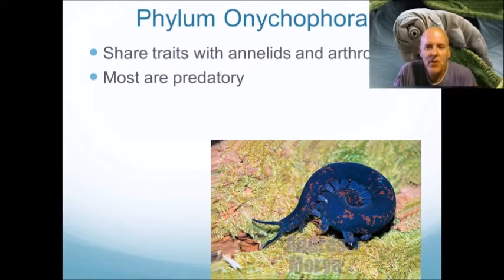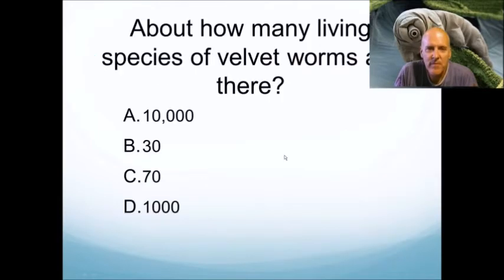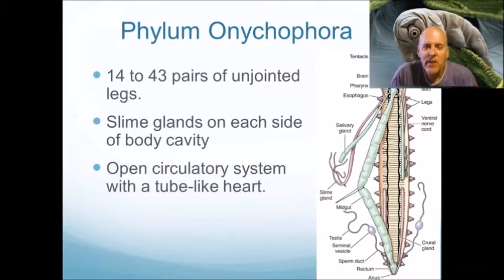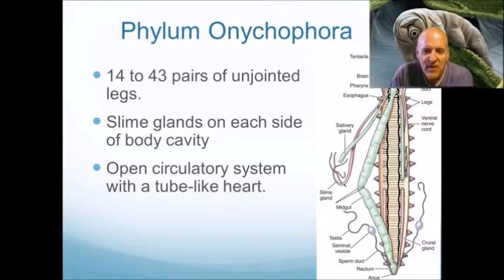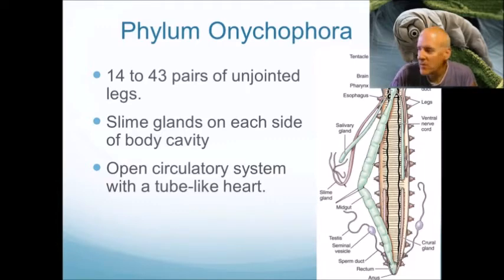Most velvet worms are predatory hunters. They have 14 to 43 pairs of unjointed legs, slime glands on each side of the body, and an open circulatory system with a tube-like heart. Remember what open circulatory means — there are no arteries and veins. Our blood is enclosed in arteries and veins, giving us a closed circulatory system, but in an open system the heart simply pumps blood from one end to the other to keep it circulating.